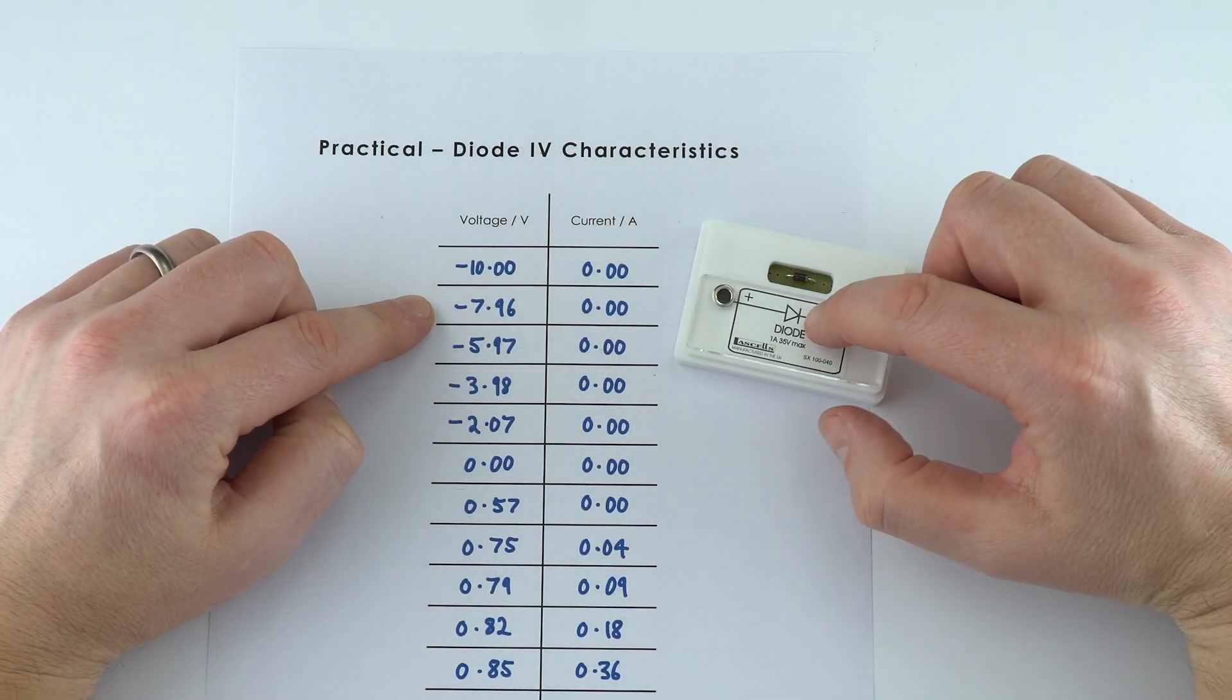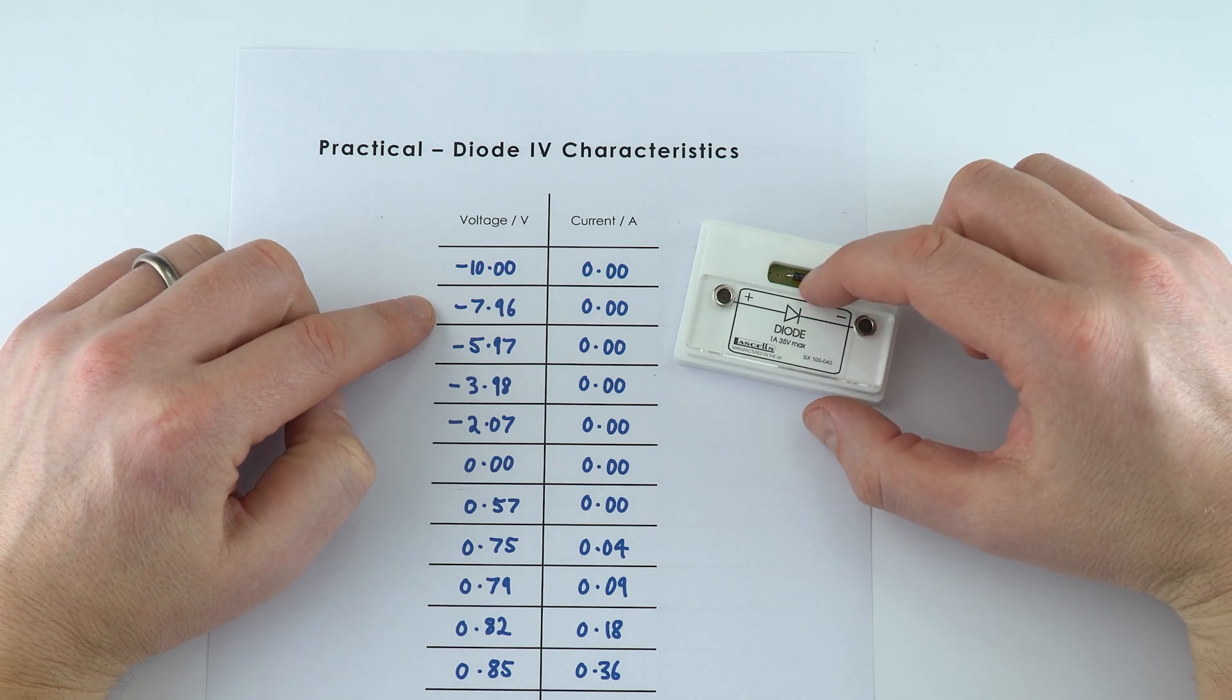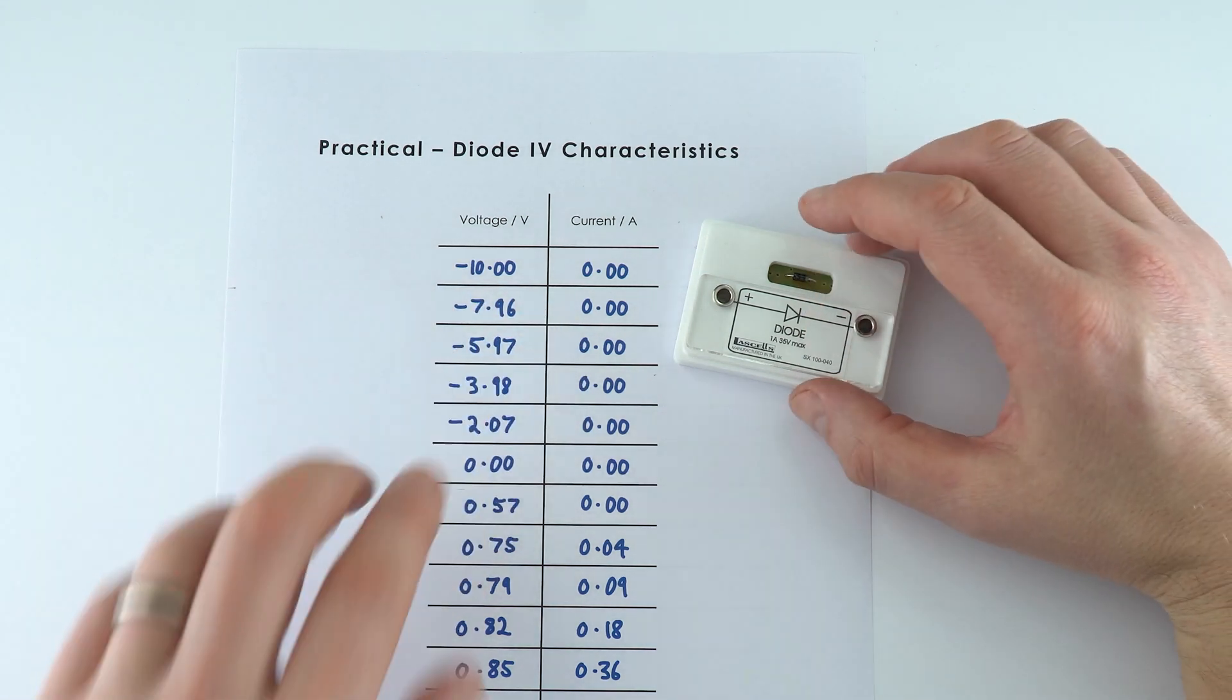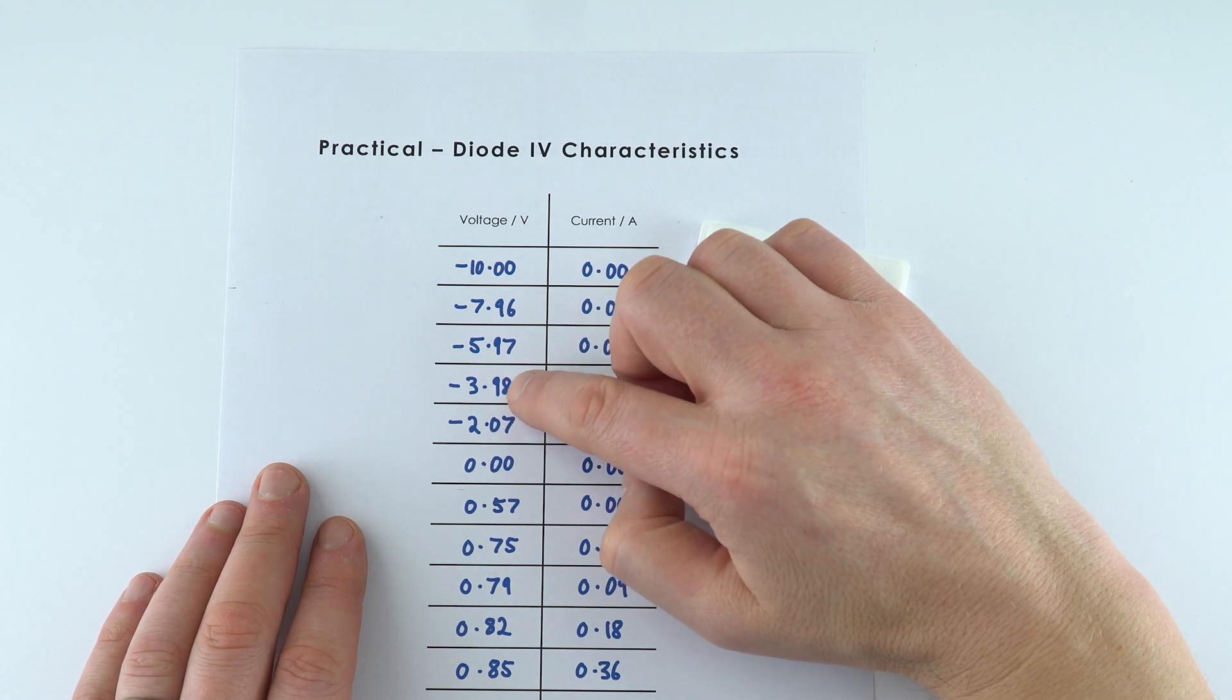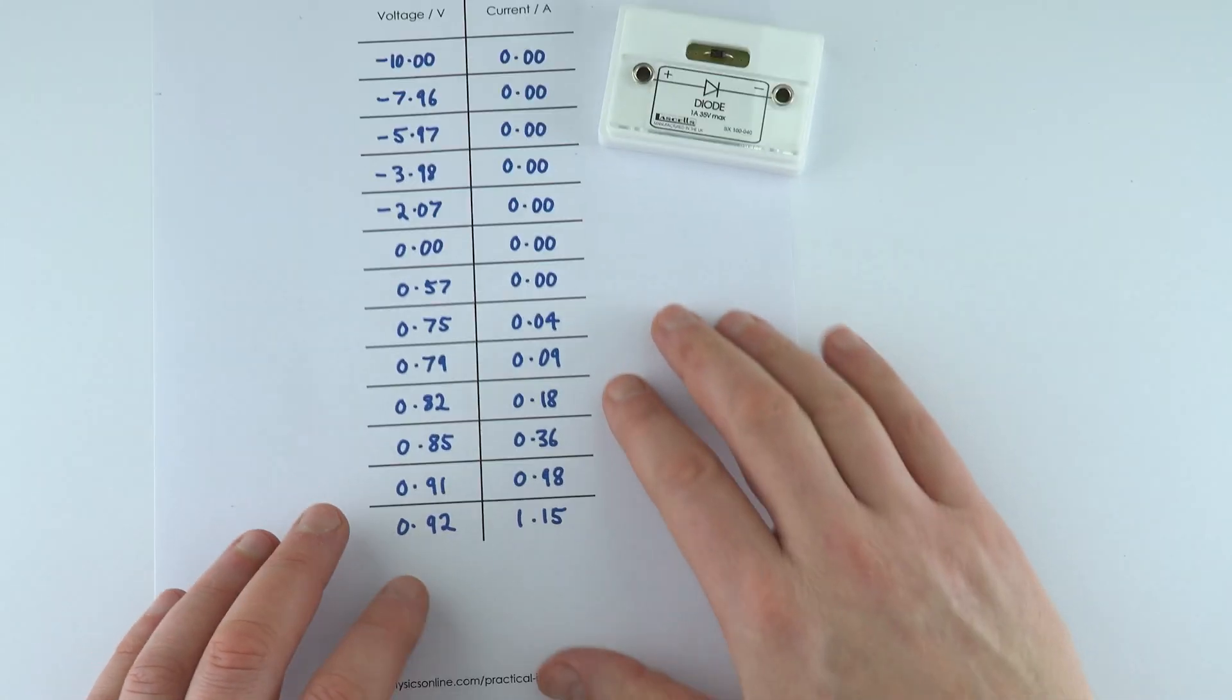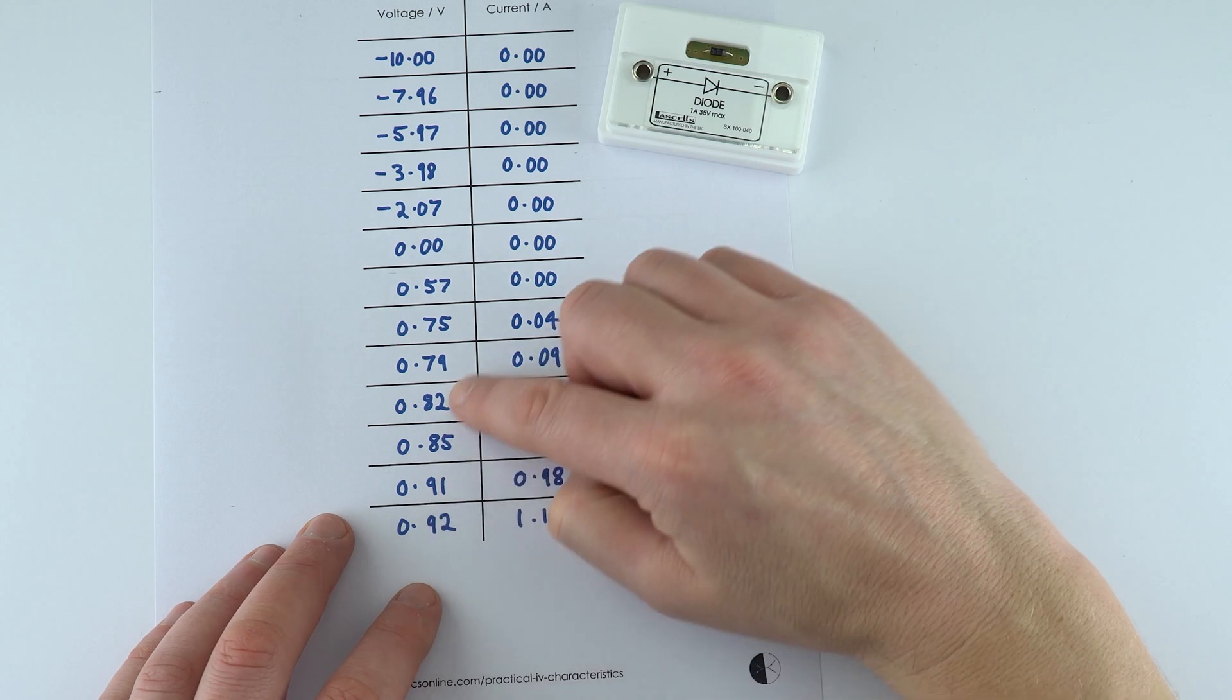So this is the data for the diode where we adjusted the voltage across it and looked at how the current varied. We can see where we've got negative values of V we have zero current, and actually we have quite a lot of values which are quite close together.